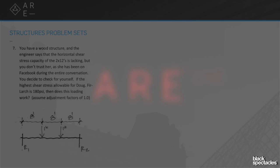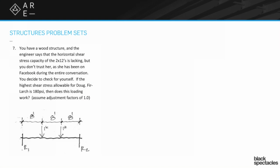Question seven: you have a wood structure and the engineer says that the horizontal shear stress capacity of the two by twelves is lacking, but you don't trust her — as she's been on Facebook during the entire conversation. So you decide to check for yourself.